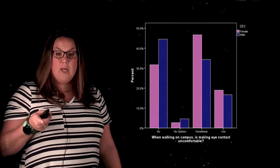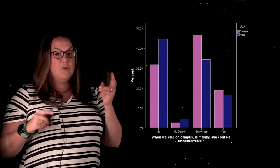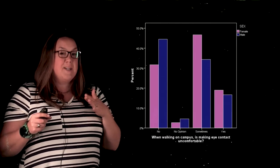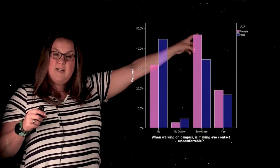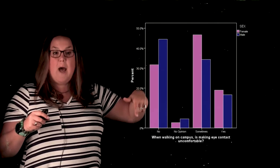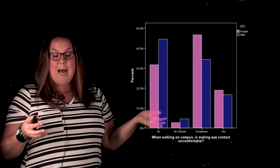When you're looking at two categorical variables or two variables in general, sometimes you can have a relationship between the two, which means here, maybe the sex does affect how uncomfortable people are making eye contact.